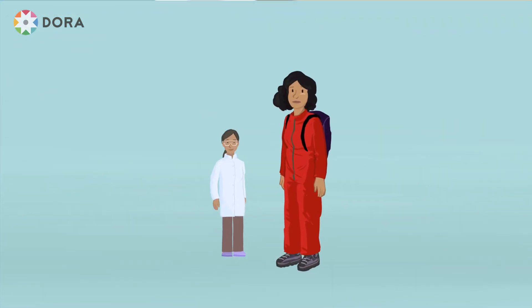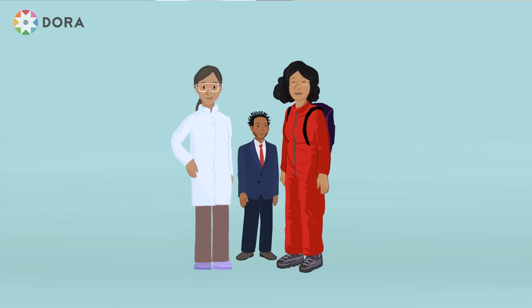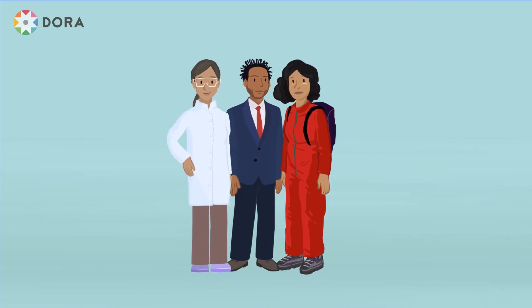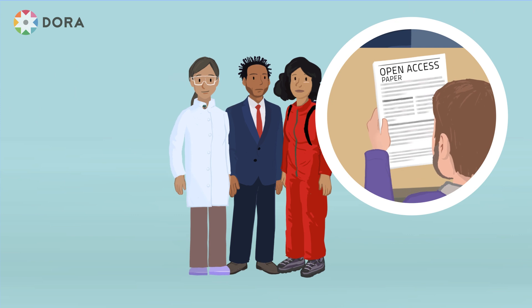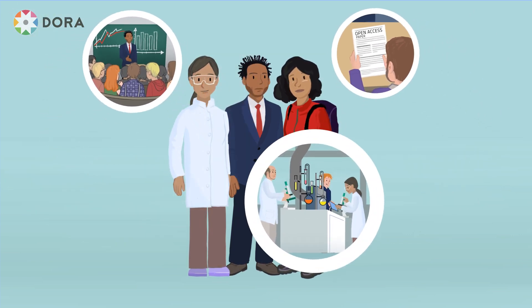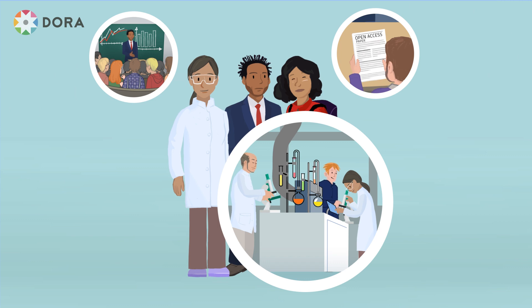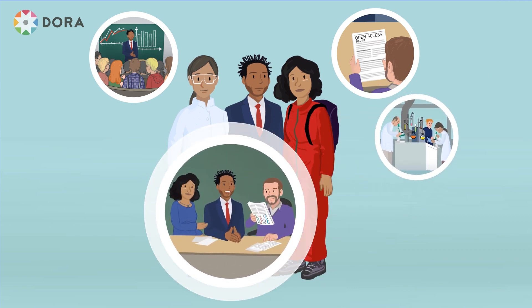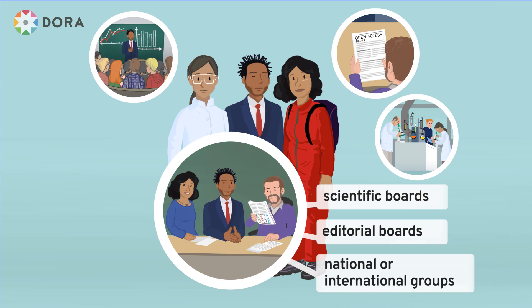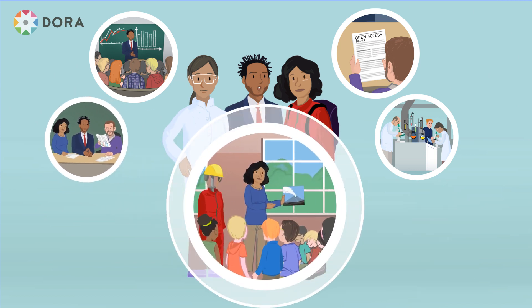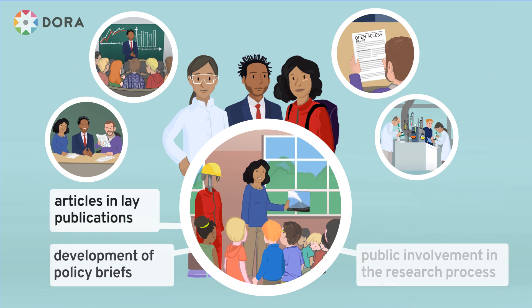Third, look broad instead of narrow to capture the full range of a researcher's contributions. Beyond publications, consider also outputs, outcomes and activities such as contributions to open science, teaching, leadership and mentoring, active research collaborations and stakeholder engagement, service to the research community such as memberships in committees and other similar activities, and societal interactions such as participation in outreach events and other similar activities.